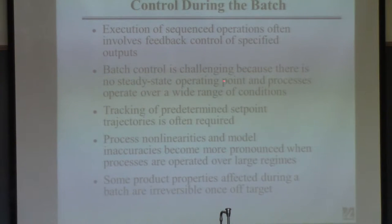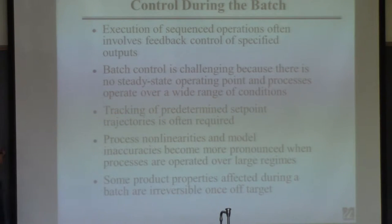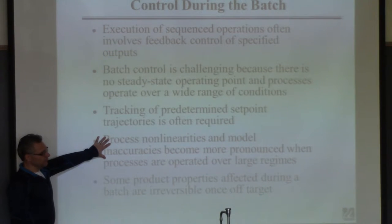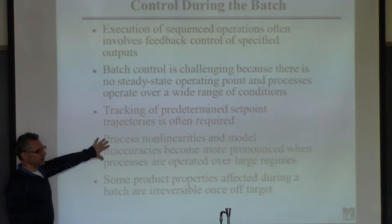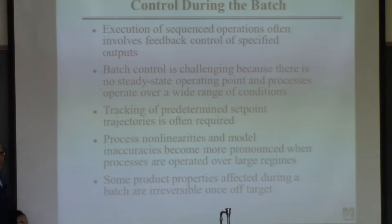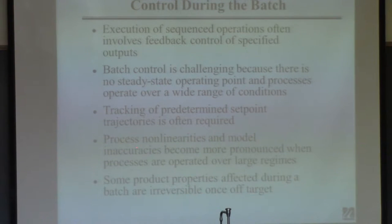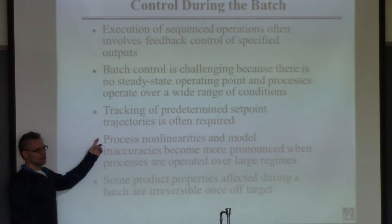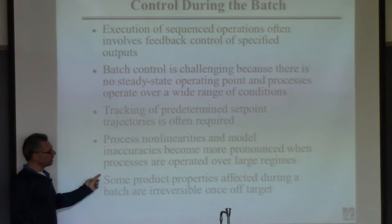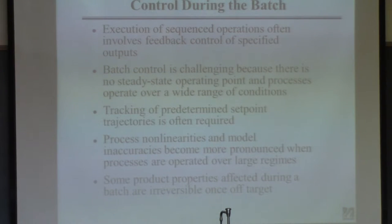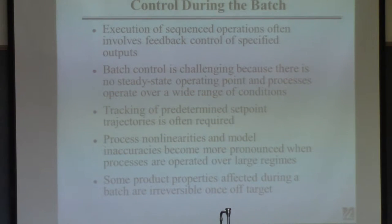Control during the batch is typically quite challenging because there's no steady-state operating point and the systems operate over a wide range of conditions. When systems operate over a wide range, two bad things happen: first, if the system is inherently nonlinear — no system is really linear — they're often linear enough or you operate them over a small enough window that you can pretend they're linear, which is what we've been doing all along. But when operating continuously and you keep near the set point, that assumption is usually not too bad.